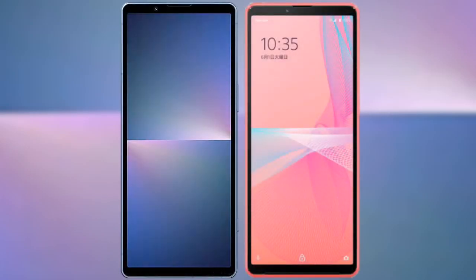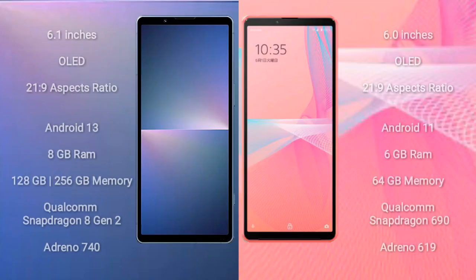I will compare the new Sony Xperia 5 Mark 5 with the Sony Xperia 10 Mark 3 Light. The Sony Xperia 5 Mark 5 comes with a 6.1-inch portable OLED display with a 21:9 aspect ratio. The Sony Xperia 10 Mark 3 Light comes with a 6-inch OLED display and a 21:9 aspect ratio.